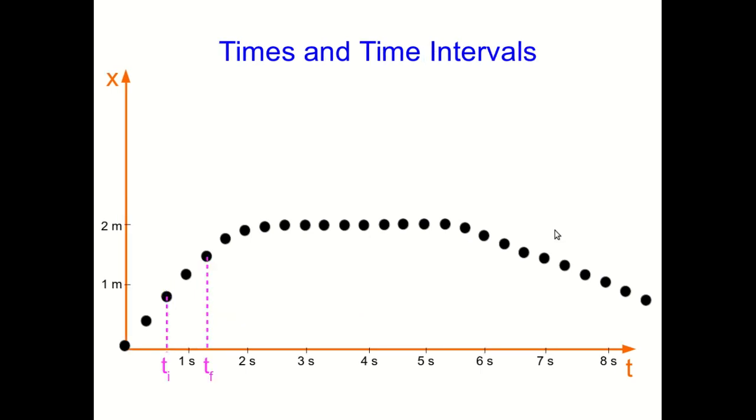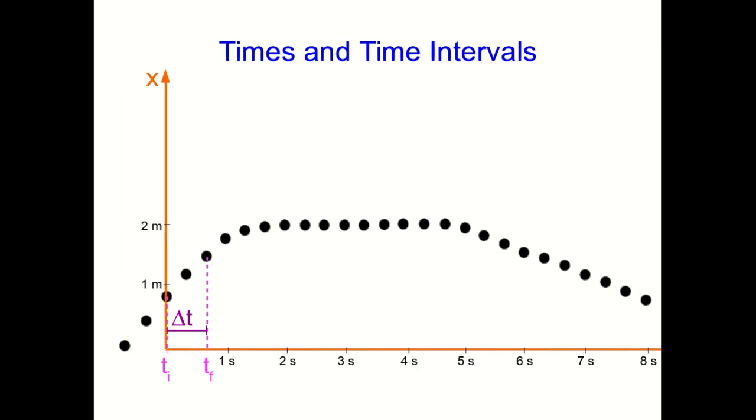Before we get to velocity, I need to point something out about time. And it's that it works sort of the same way. If we look at the times of those two instances that I picked on the previous graph, we can label them tf and ti, and we can read them off of the time axis. And there is some time interval, a difference in time, which we would just get by tf minus ti. But our choice of when time was zero was totally arbitrary, and so I could redraw my axes this way so that I've redefined when time is zero.